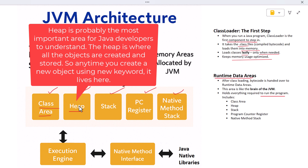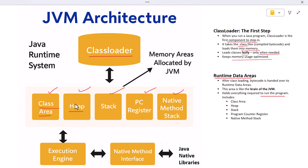Then we have the heap, which is probably the most important area for Java developers to understand. The heap is where all the objects are created and stored — so anytime you create a new object using 'new', it lives here. Java's garbage collector keeps an eye on this space; if an object is no longer reachable, it will be marked for cleanup and the memory is reclaimed.